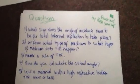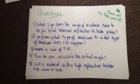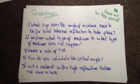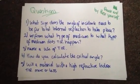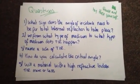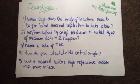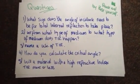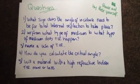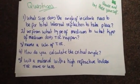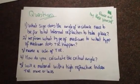Here are your questions for today — pause and try these for yourself. What size does the angle of incidence need to be for total internal reflection to take place? What type of medium to what type of medium does total internal reflection happen? Name a use of total internal reflection. How do you calculate the critical angle? And will a material with a high refractive index totally internally reflect more or less?